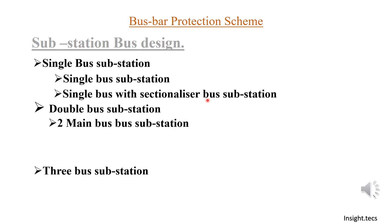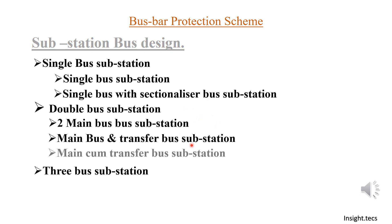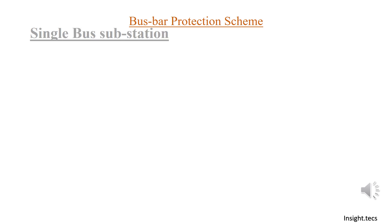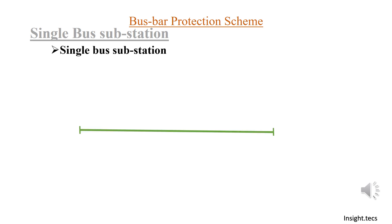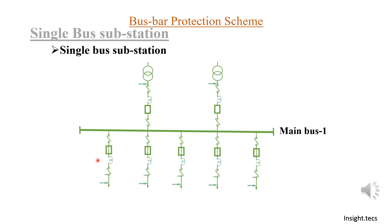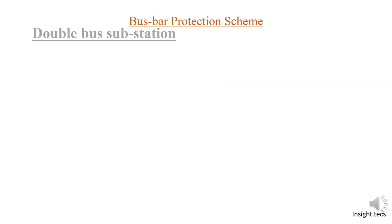We have also discussed two main bus substation and main bus and transfer bus substation, which we are going to discuss in today's video. There are also three bus substation arrangements. As we have already covered, a single bus substation has a transformer, a bus, and then a number of outgoing feeders.